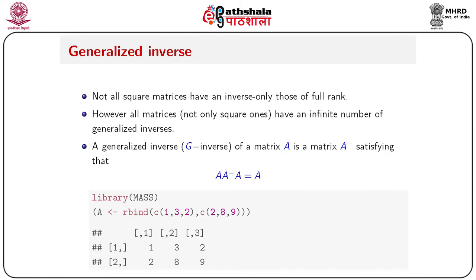Now we'll see how to get the generalized inverse. Where a square matrix is singular, you cannot calculate the regular inverse, but you can compute the g-inverse. Not all square matrices have an inverse — only those of full rank. However, all matrices have an infinite number of generalized inverses. A generalized inverse of A is a matrix A_g satisfying: A times A_g times A equals A.